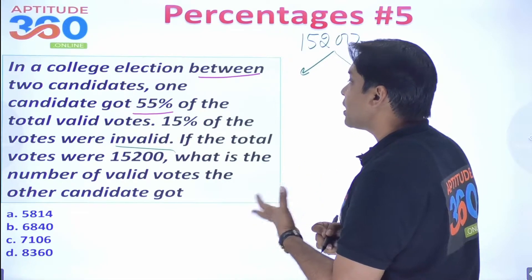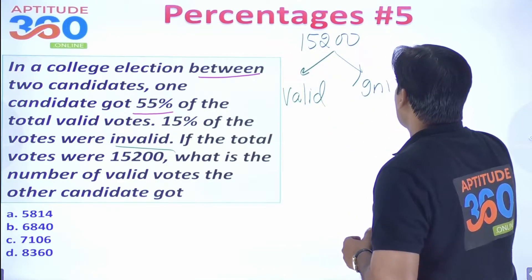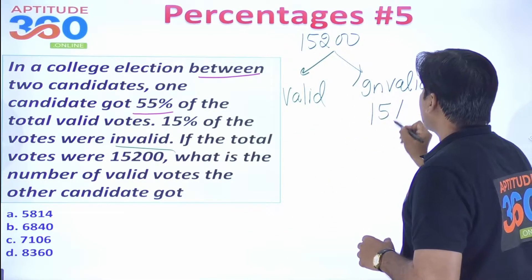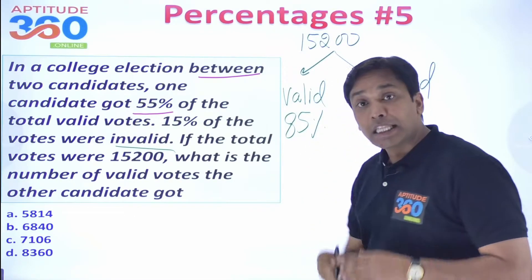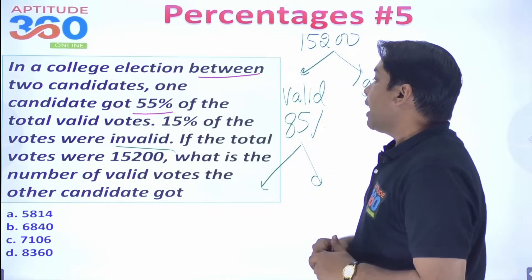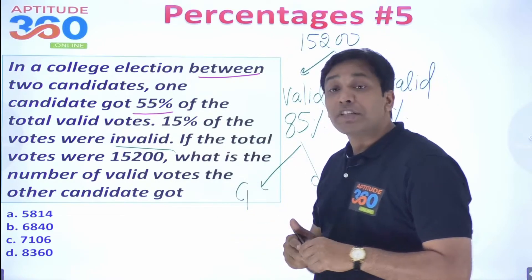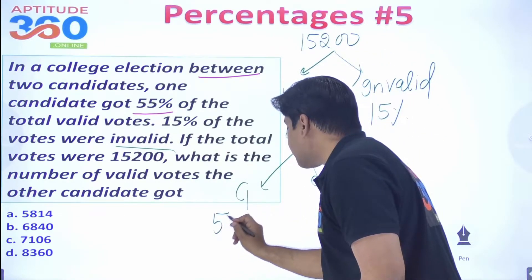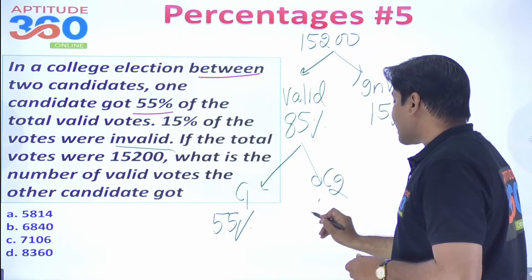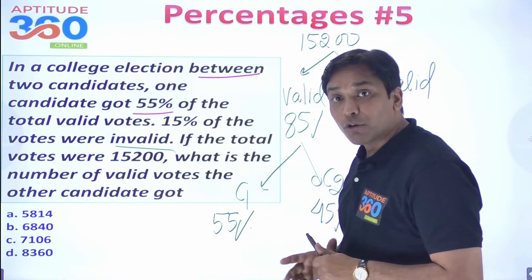There are two types of votes: valid and invalid. 15% of votes are invalid, so 85% are valid. Candidate 1 gets 55% of the valid votes, and candidate 2 therefore gets 45% of the valid votes.